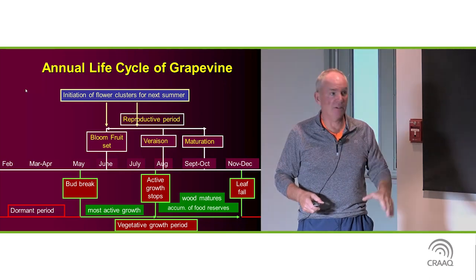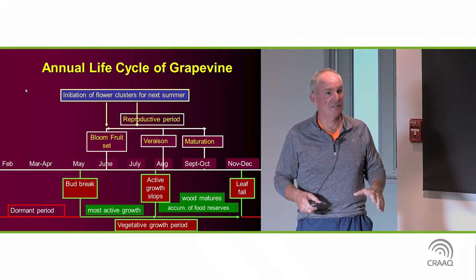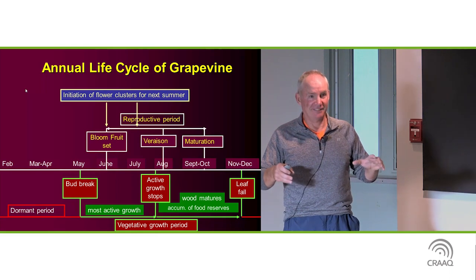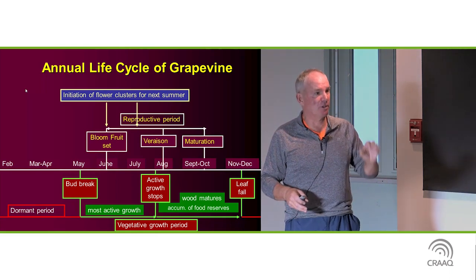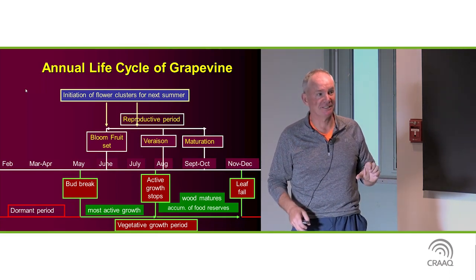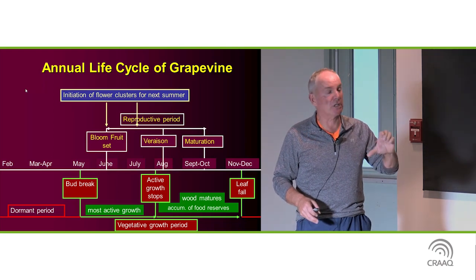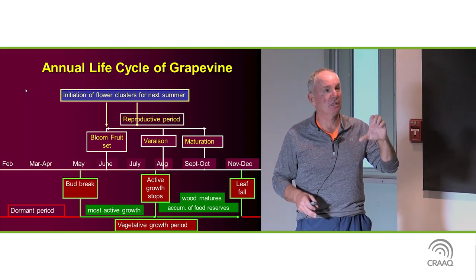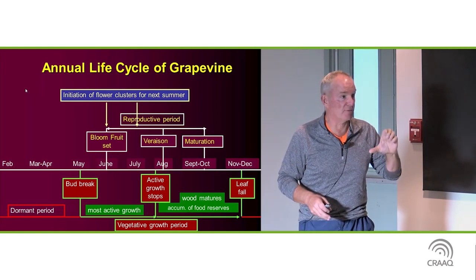It's also influenced by the crop level. If you have a very, very heavy crop one year, the plant will flower the following year, but often clusters will be smaller. And that's often, we don't see fewer clusters, but we may see clusters with fewer flowers.